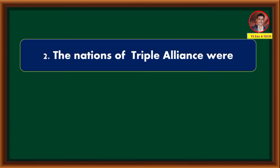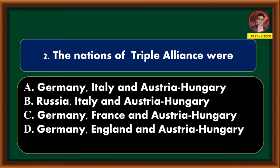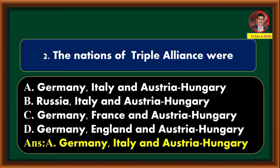The nations of the Triple Alliance were — Germany, Italy and Austria-Hungary; Russia, Italy and Austria-Hungary; Germany, France and Austria-Hungary; Germany, England and Austria-Hungary. Correct answer is option A: Germany, Italy and Austria-Hungary.